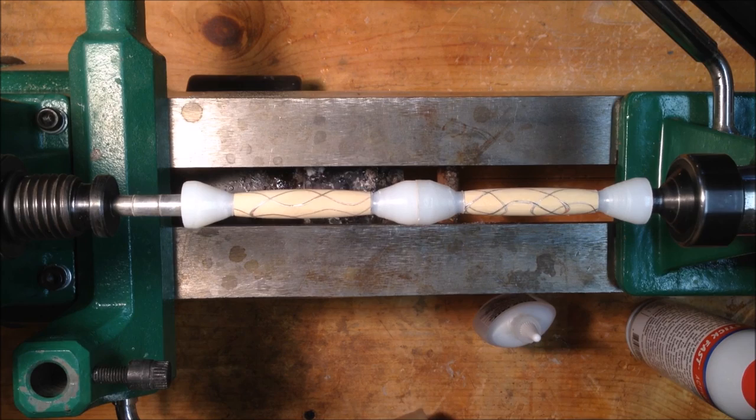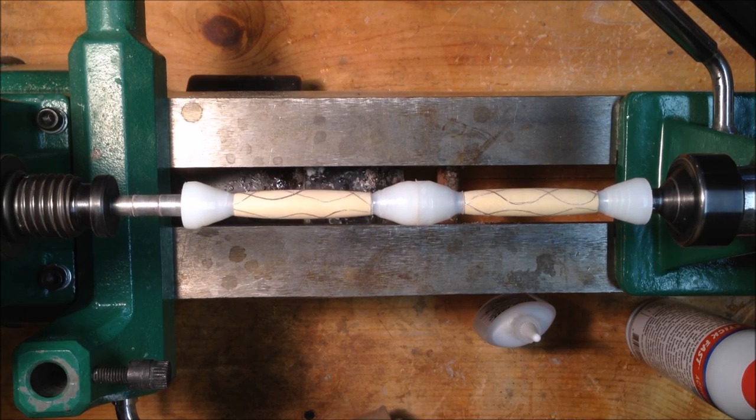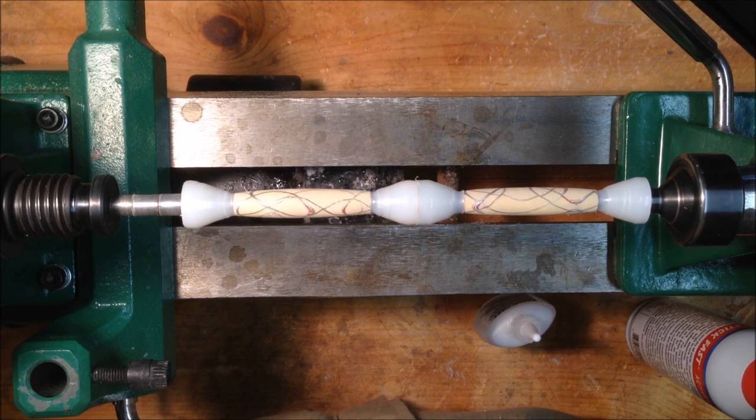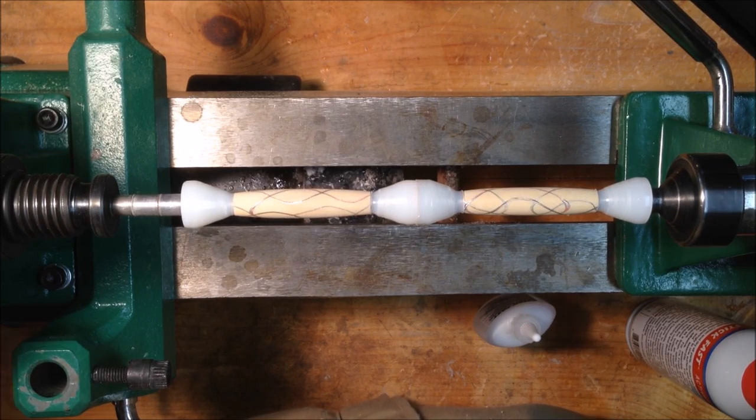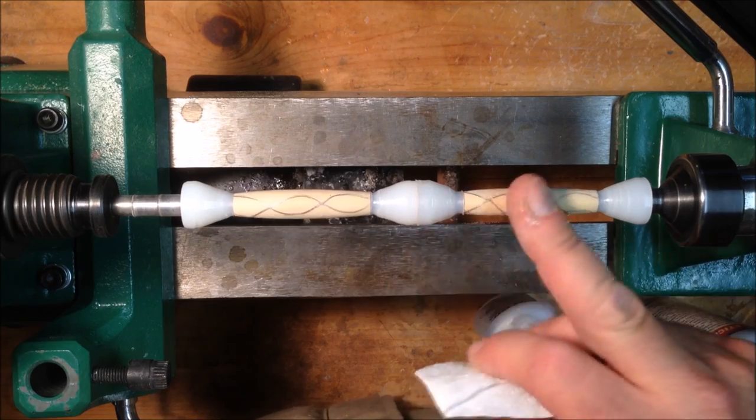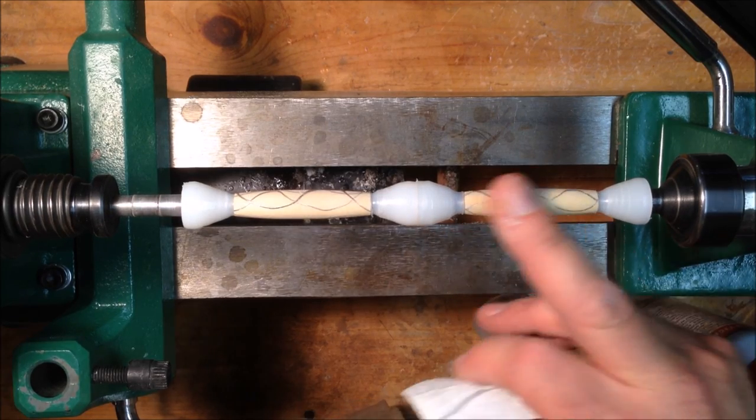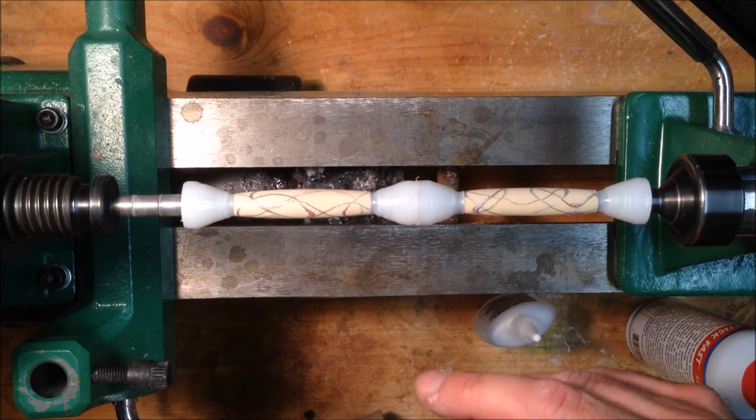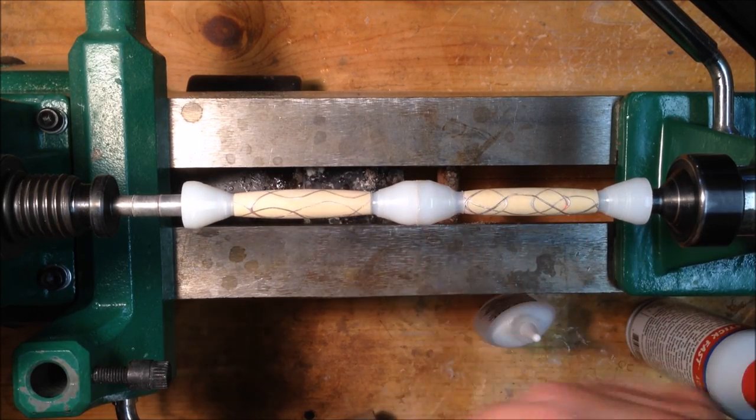I am really happy with how this blank is turning out. I don't know, this was something I decided to try. I didn't invent this. Other people have done it, I'm sure, but I had never tried it, and I thought I'd give it a shot, and I'm really happy. I'm going to go ahead and put some CA. I've got it sanded down to 400, and I've cleaned it off with some denatured alcohol. I'm going to go ahead and apply some CA.